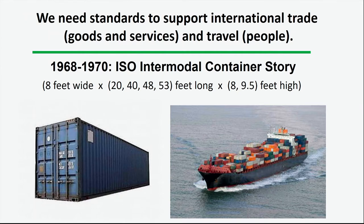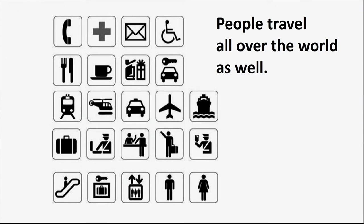Once the container came around, international trade boomed because it was just much easier to do, and safer and more reliable. Second point is international travel is important. People travel all over the world. Here are examples of symbols you might find in an airport or train station. Clearly, if you're in a country where you don't speak the language, you'd still need to be able to move around. Having symbols as opposed to words overcomes that problem.